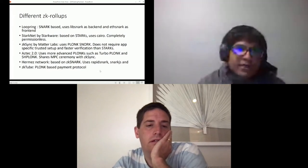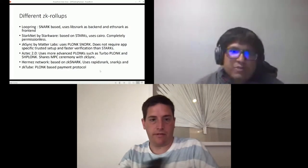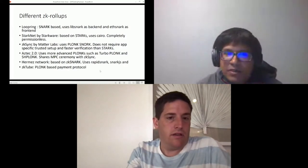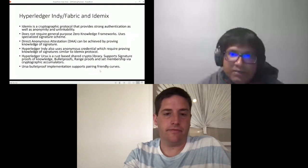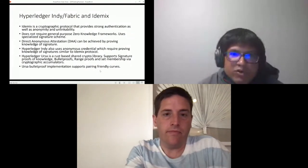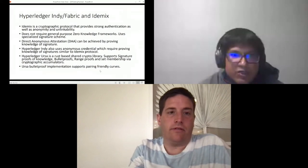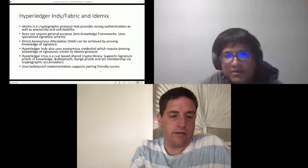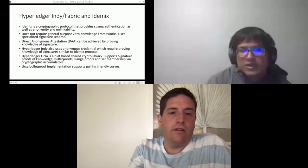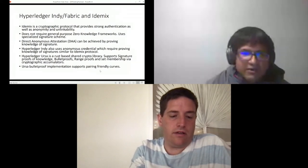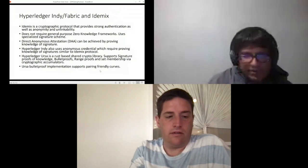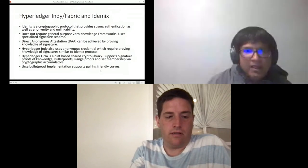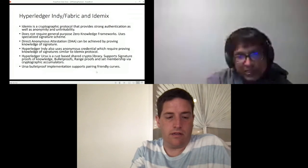Now coming to Hyperledger. In Hyperledger Indy as well as Hyperledger Fabric, they are using Idemix. Idemix is a cryptographic protocol that provides strong authentication as well as anonymity and unlinkability. However this doesn't actually use the general purpose framework—it uses specialized signature schemes. As a result they are very efficient and can be implemented from very standard assumptions. Indy also uses anonymous credentials which require proving the knowledge of signatures similar to Idemix.